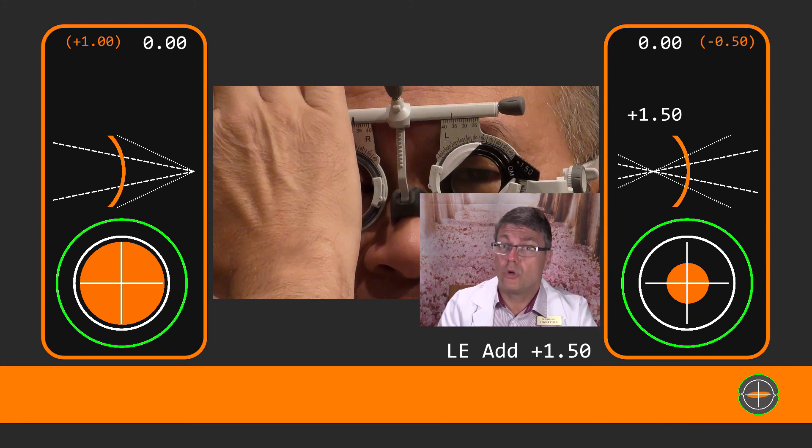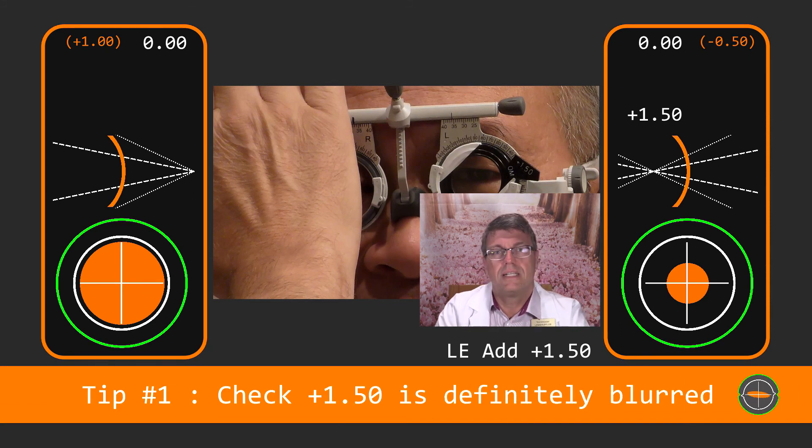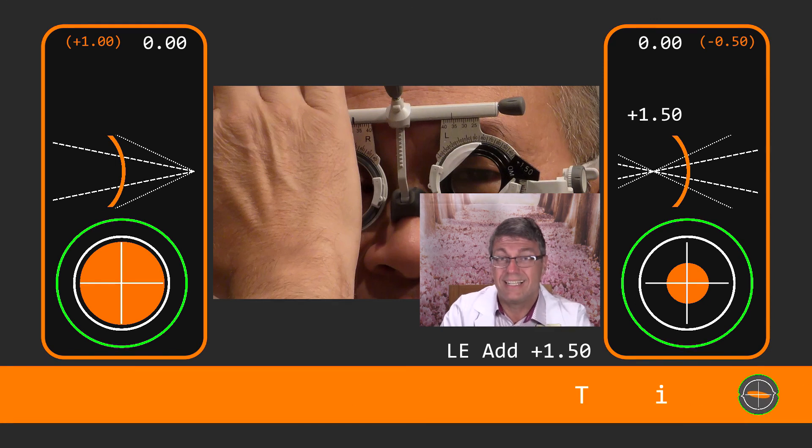I always test the right eye first, a nice habit to get into I think. Covering up the opposite eye as I did in this case to the blurring occluder is essential. It's so easy to get confused if the eye with the blurring occluder in isn't blurry. It can really mess things up. There's no need to measure the acuity, just check that it's blurry. If it's not add more plus until it is.